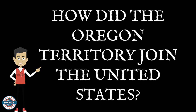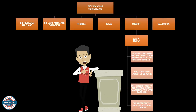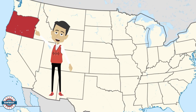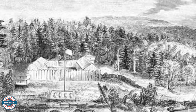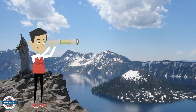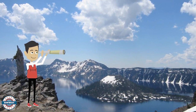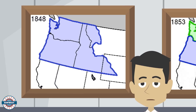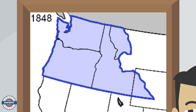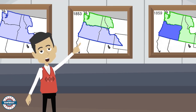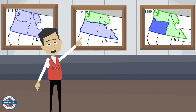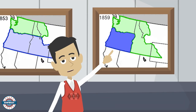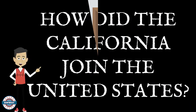How did Oregon join the United States? An 1818 treaty declared that the United States and England would share the Oregon Territory. This agreement lasted for 25 years. The 1846 Oregon Treaty split the Oregon Territory at the 49th parallel. The United States took the southern portion while England took the northern portion. The picture in the top left indicates the Oregon Territory. You can see in 1853 where the Oregon Territory is split into two. The green represents the Washington Territory, and then in 1859 you can see the state of Oregon surrounded by the Washington Territory.